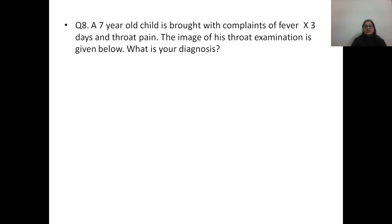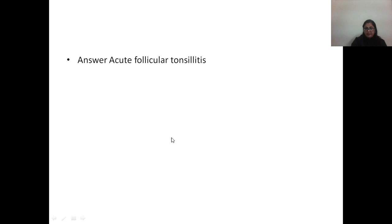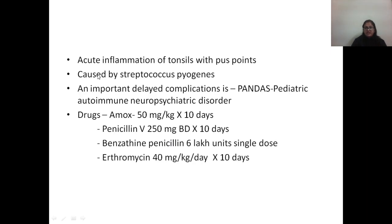Question number 8: a 7-year-old child is brought with complaints of fever for 3 days and throat pain. The image shows enlarged congested tonsils with pus points, which is diagnostic of acute follicular tonsillitis. This is caused by Streptococcus pyogenes. One important delayed complication is PANDAS — pediatric autoimmune neuropsychiatric disorder. Treatment options include amoxicillin, penicillin V as oral drugs, or benzathine penicillin as a single dose.